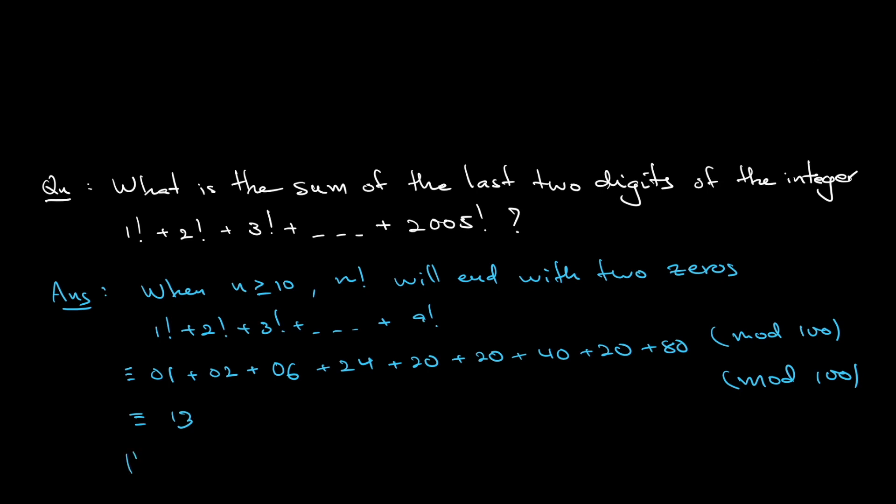Hence, the sum of the last two digits is basically just 1 plus 3. So the answer is 4.